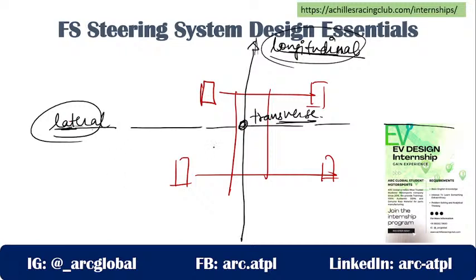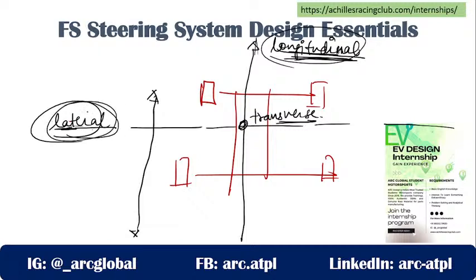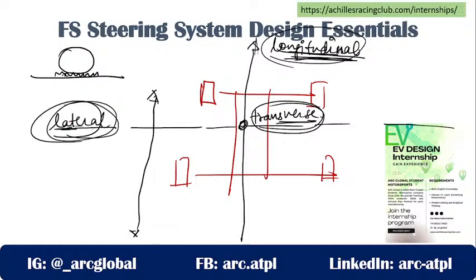There are certain forces and movements that govern the vehicle's motion. Any force acting front to rear or rear to front is a longitudinal force. Any force acting sideways is a lateral force. Any force acting top to bottom or bottom to top is a transverse force. Also remember: certain forces act between the tire and the road, while certain forces act on the center of gravity of the vehicle.